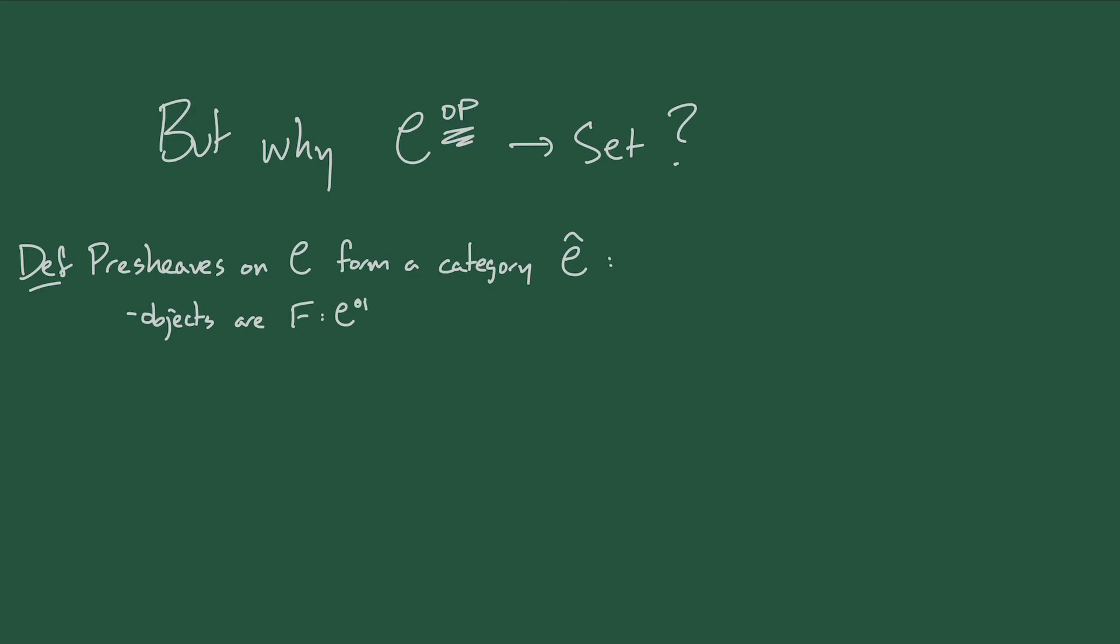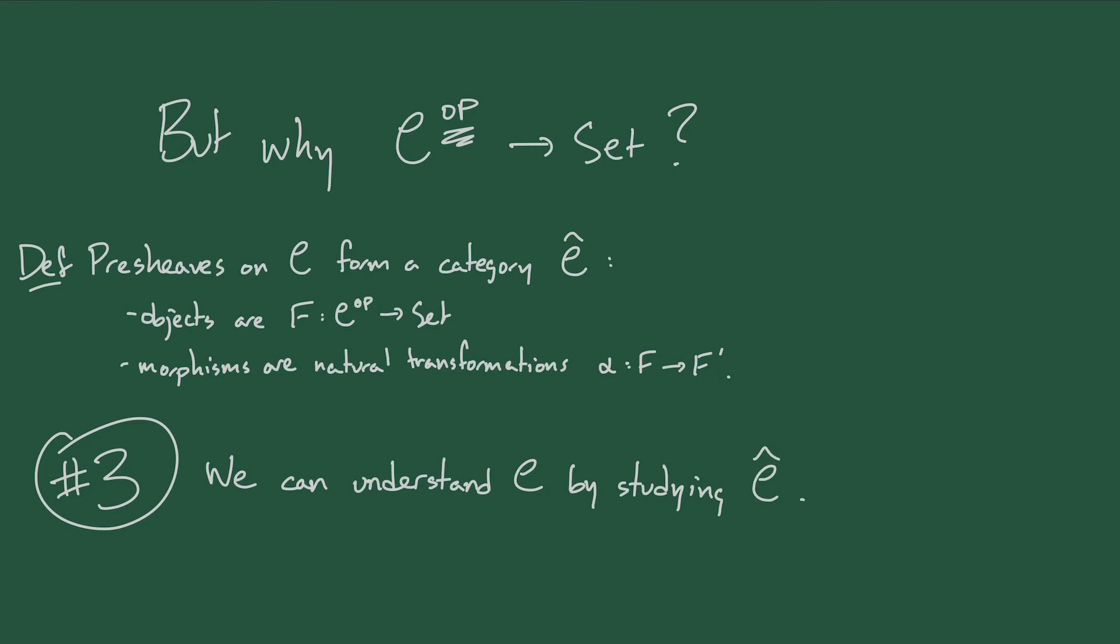For any small category C, the presheaves on C form a category C hat, whose objects are presheaves on C, functors from C op to set, and whose morphisms are natural transformations. And the last perspective on presheaves that I want to talk about has to do with this category. And in short, the idea is that we can understand a category C by studying the category of presheaves on C.